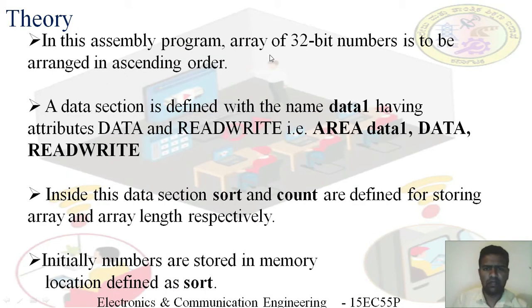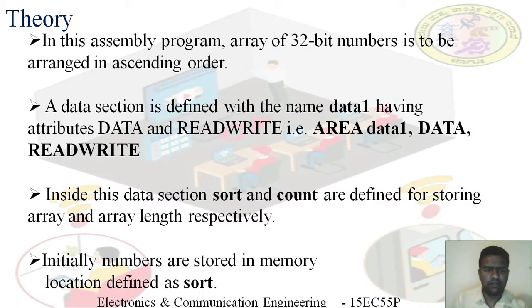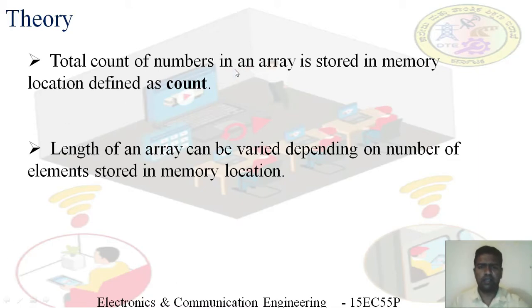In this assembly program, an array of 32-bit numbers is to be arranged in ascending order. For this, a data section is defined with the name data1 having attributes data and read-write — that is, 'area data1 data read-write' — which is defined in our program. Inside this data section, 'sort' and 'count' are defined for storing the array and array length respectively. Initially, numbers are stored in the memory location defined as 'sort', and the total count of numbers in the array is stored in the memory location defined as 'count'. The length of the array can be varied depending on the number of elements stored.